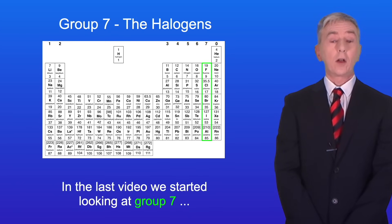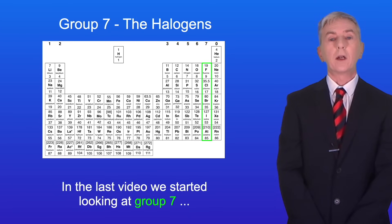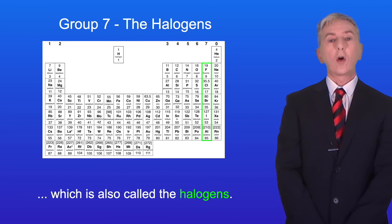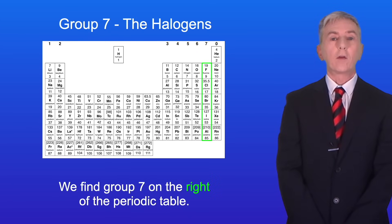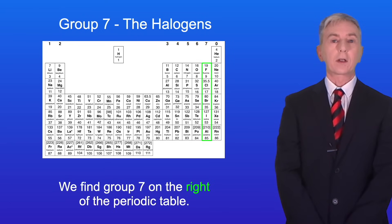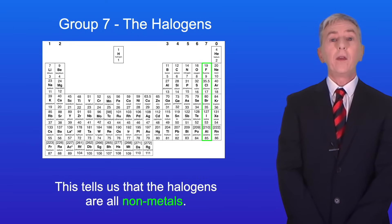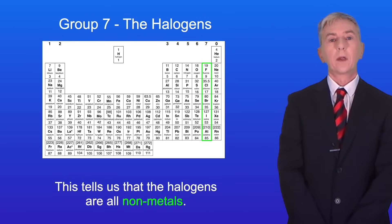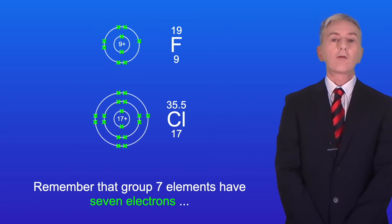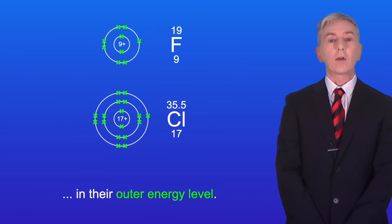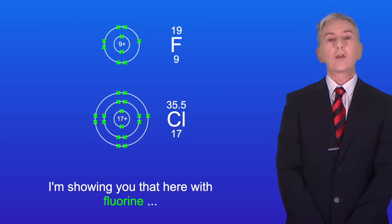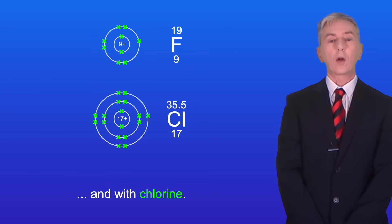In the last video we started looking at Group 7, which is also called the halogens. We find Group 7 on the right of the periodic table and this tells us that the halogens are all non-metals. Remember that Group 7 elements have seven electrons in their outer energy level, and I'm showing you that here with fluorine and with chlorine.